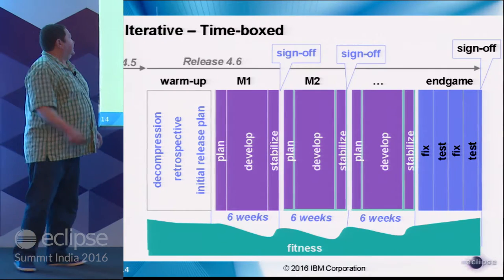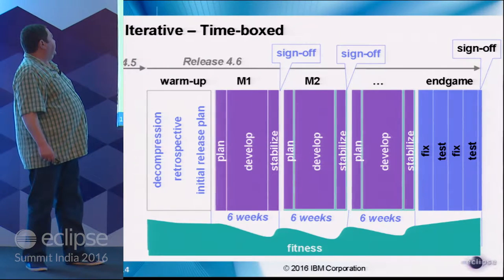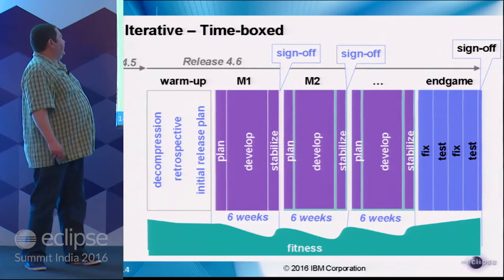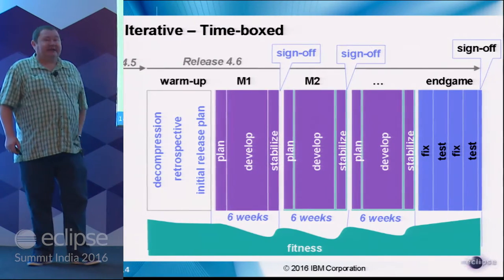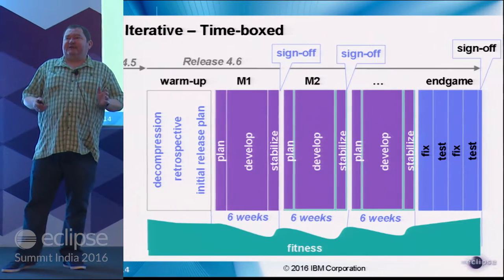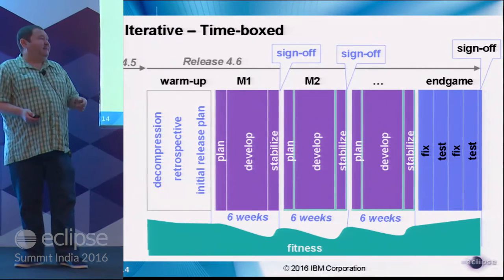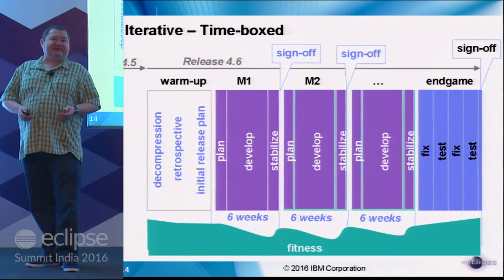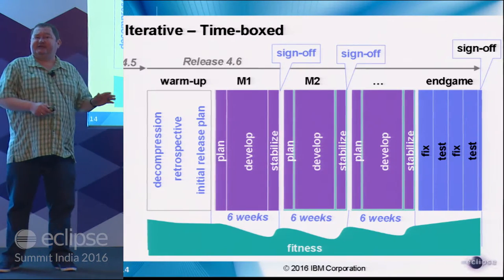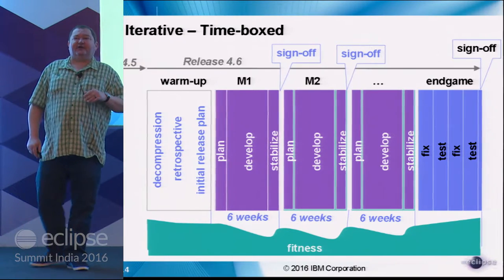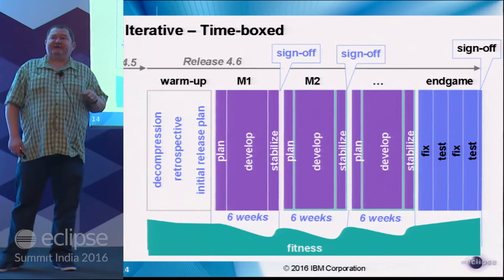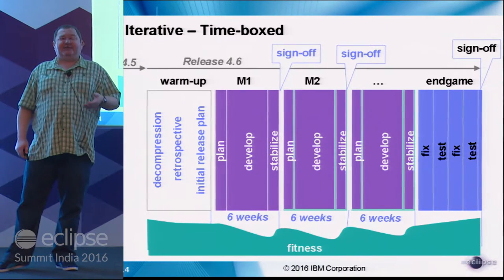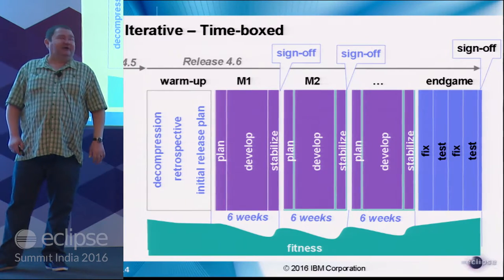Here you can see how release 4.6 was developed, with seven milestones of plan, develop, and stabilize. Not every milestone is the same: M6 freezes the API so adopters and release-train projects can be sure nothing changes after that point. M7 freezes features — no new feature work is allowed after that, and the milestone is used for polishing and performance improvements.